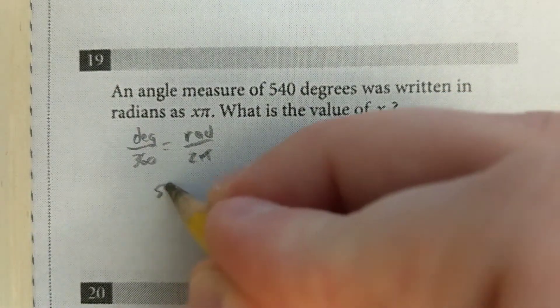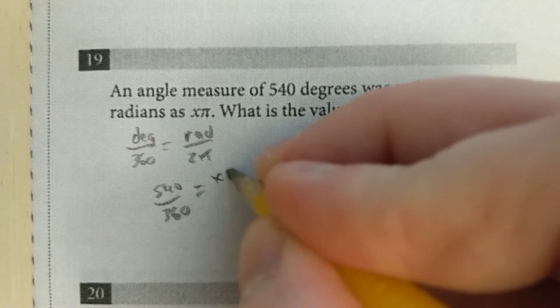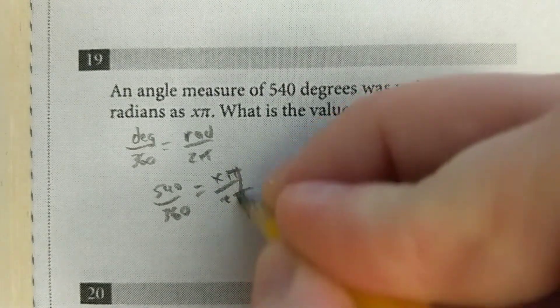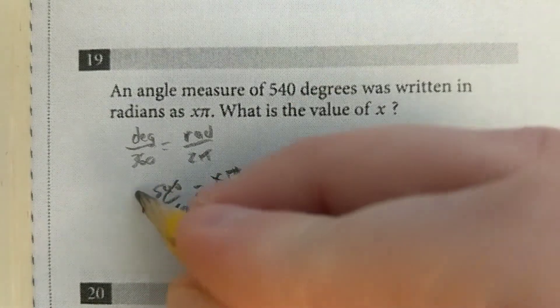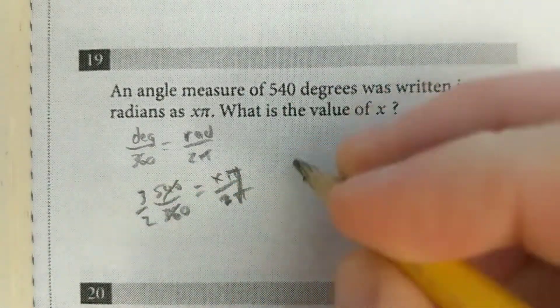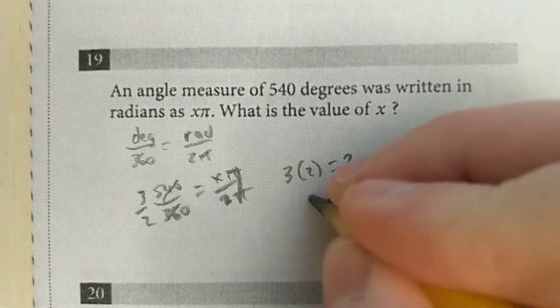So we got 540 over 360, and they tell us the radians are x pi over 2 pi. Again you want to cancel out there, and you can simplify this to 3 over 2, and then you cross multiply. It's 3 times 2 equals 2x, so that means that x equals 3.